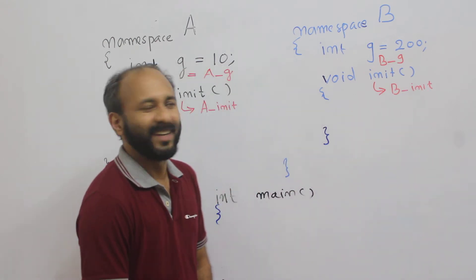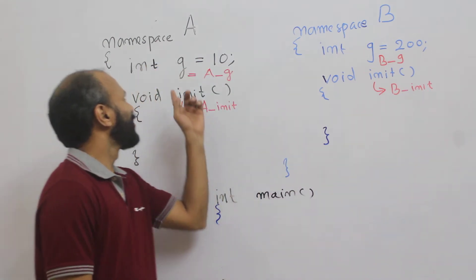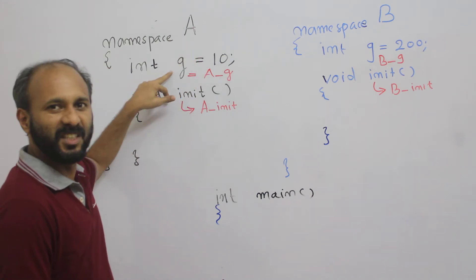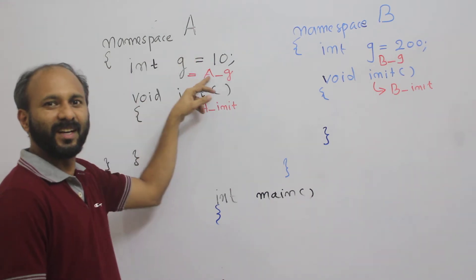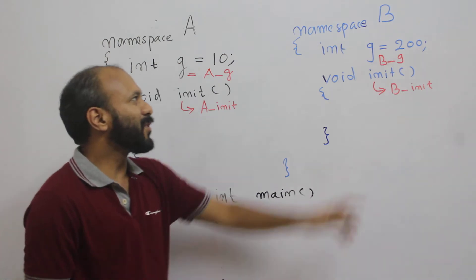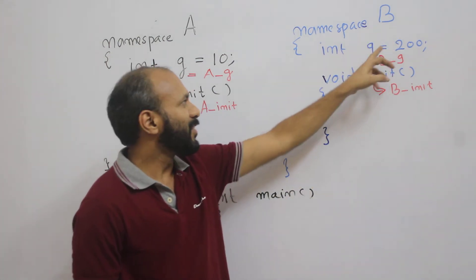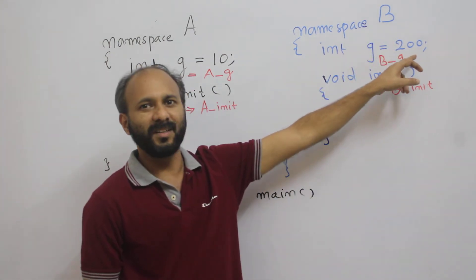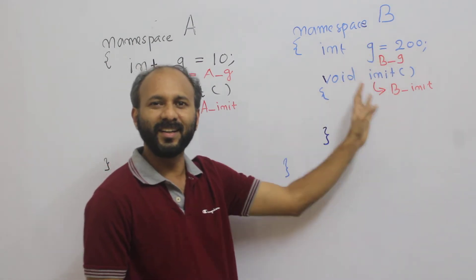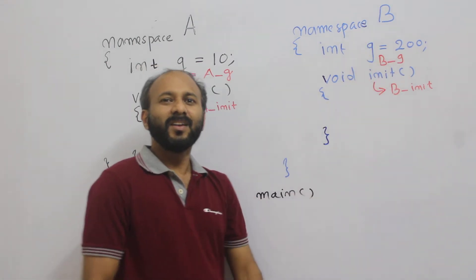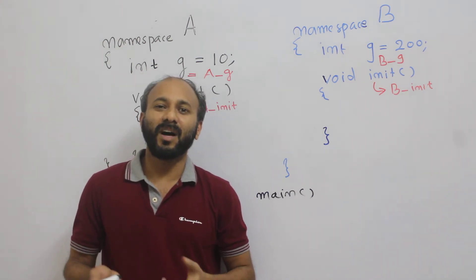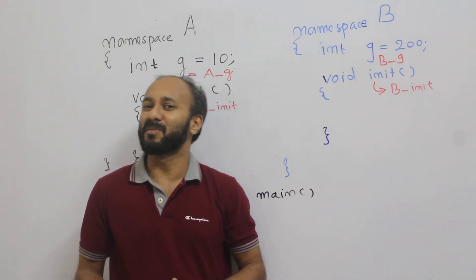I am using the same old example. I have two namespaces. Namespace A with one element g which is equal to 10 and one function init. I have one more namespace, namespace B with a variable g which is equal to 200 and the same function name used there also.